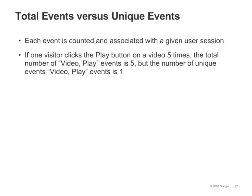In your reports, you'll notice that both total events and unique events are counted. Total events is simply the total number of times an event occurs — it's just the number of times trackEvent was called. But for unique events, each particular event is only counted once per visit. So if during a single visit a visitor presses play five times on the same movie, total events will be incremented by five, but unique events will only be incremented by one.